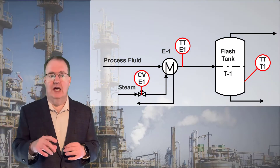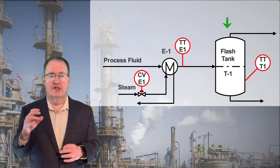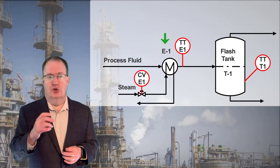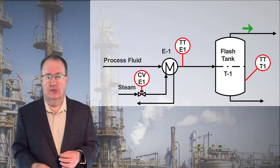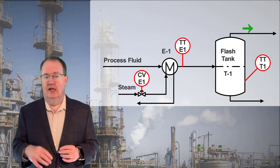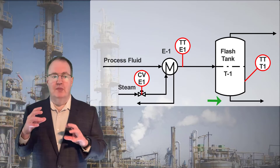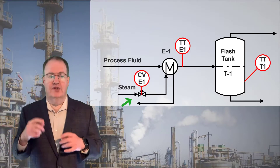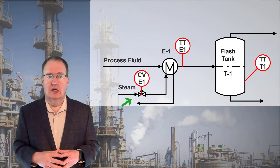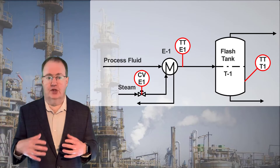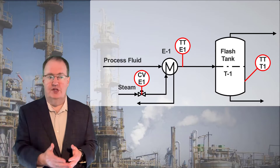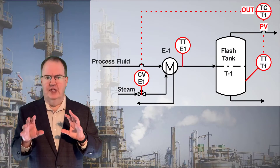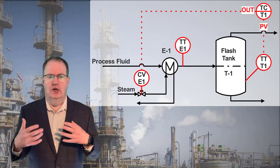In the last lecture, we learned that some process elements have slow dynamics. Here, a process stream feeding the flash tank T1 is heated using the steam heat exchanger E1 to drive off a low-boiling component as vapor. The process objective is to maintain the composition of the bottom's product by maintaining a temperature in T1. We have one degree of freedom to manipulate the steam valve CVE1, and clearly we need to use that degree of freedom to control TT T1, the T1 temperature. Sadly, that will be a slow loop because the thermal mass of T1 is substantial.